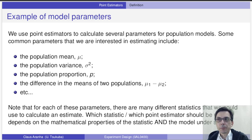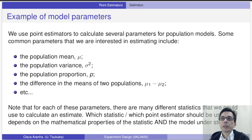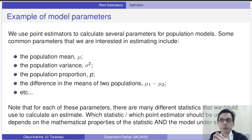There are many different point indicators that we use in science and engineering to calculate parameters of interest in our models. Some parameters that we are interested in calculating include the mean of a population, the variance, the proportion of some value, the difference between two populations, etc. One thing that is important to note is that for each of these parameters, there may be more than one way to calculate the estimate.